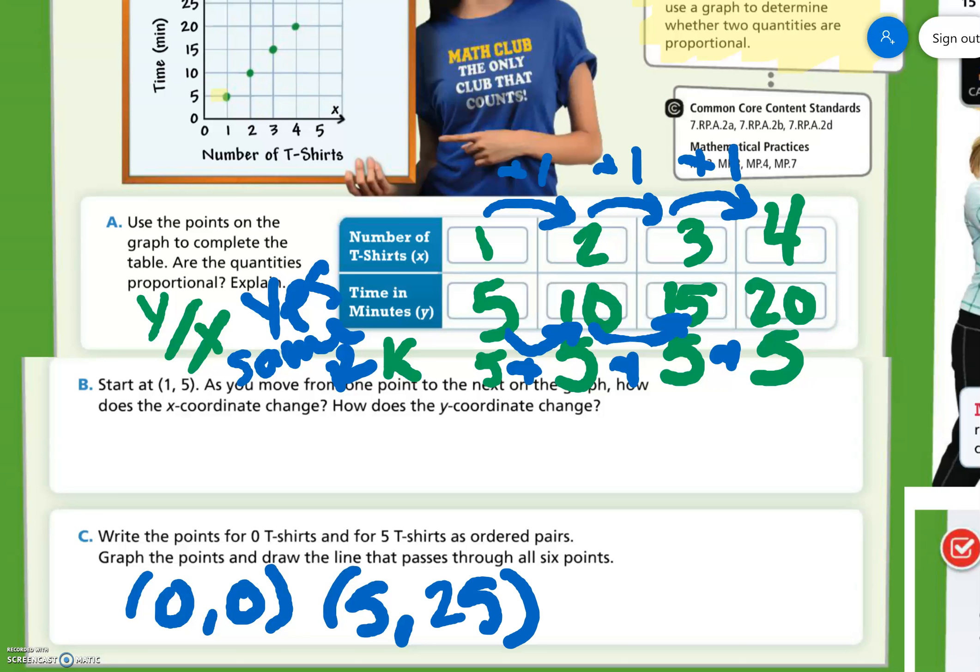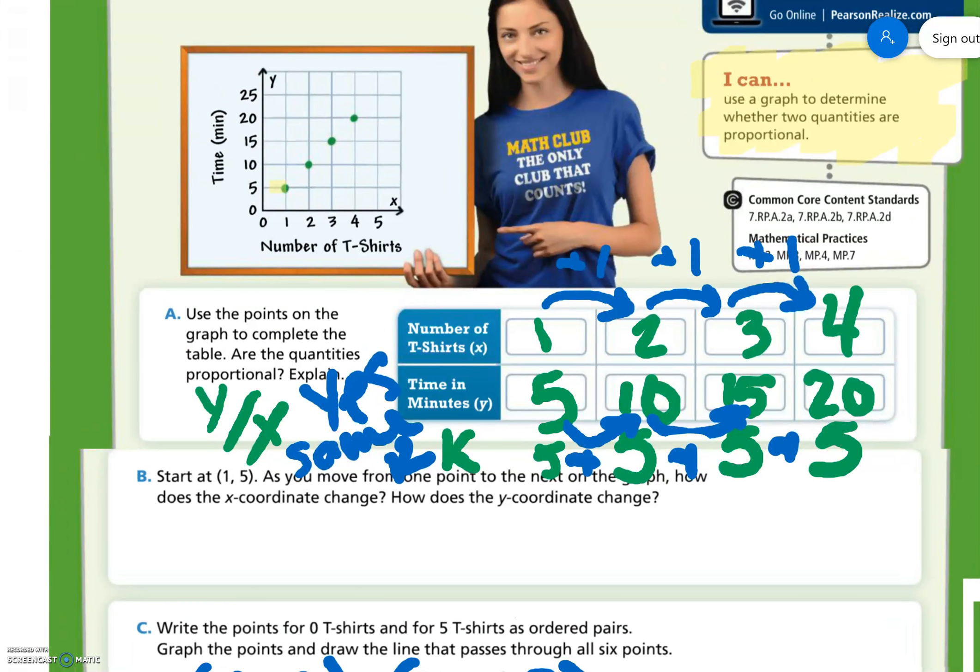Graph the points and draw the line that passes through all 6 points. So there's that point, there's this point, and boom, there's my line.